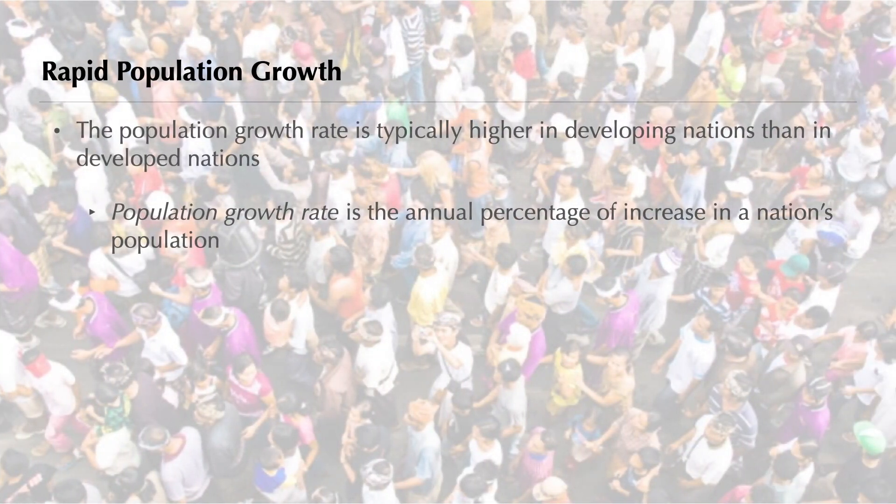The population growth rate — the annual percentage of increase in a nation's population — is higher in most developing nations than it is in developed nations. The population growth rate of developing nations is nearly three times higher than the rate of developed nations.